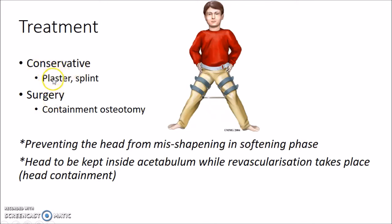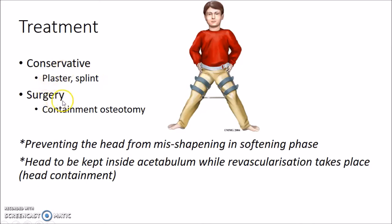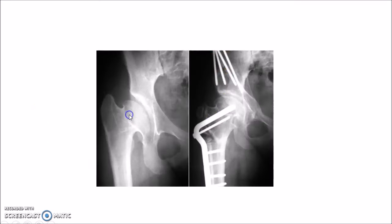Conservative methods include plaster splint. This picture shows a patient with a splint for Perthes disease. Surgery in the form of containment osteotomy can also be done for Perthes disease. This picture shows a surgically treated Perthes disease.